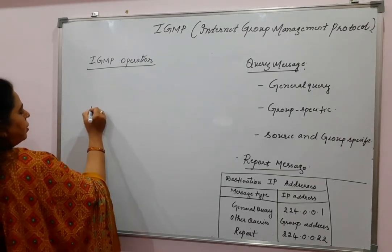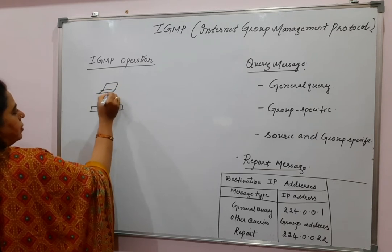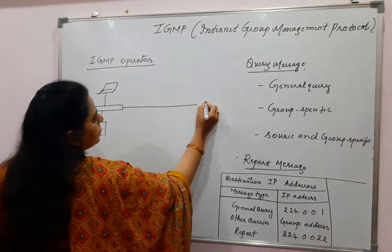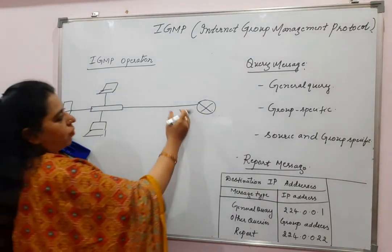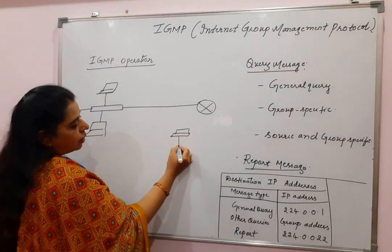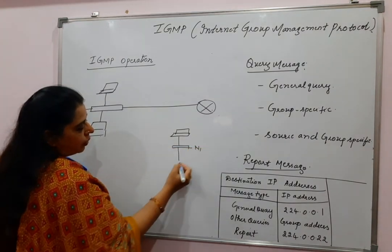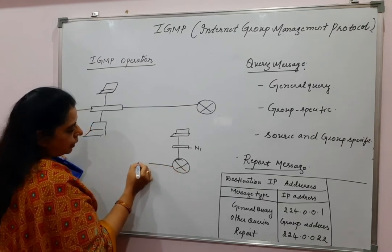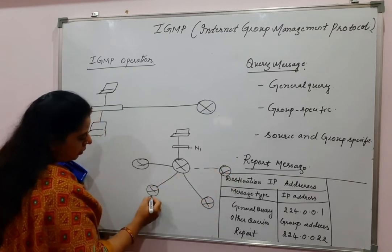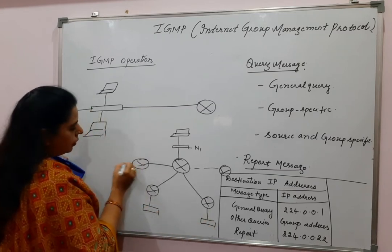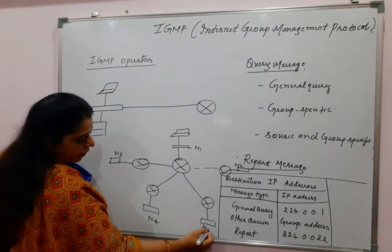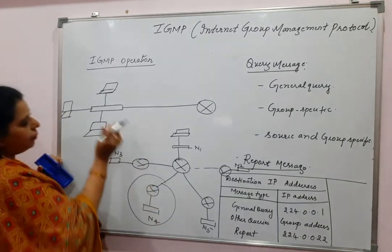Let us take one network here. Connected to this network are different hosts. This is the end part of the diagram I presented previously. There is one host connected to one router N1. This router in turn is connected to different routers — N2, N3, N4, and N5 — because it is connected to different networks.